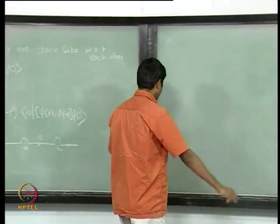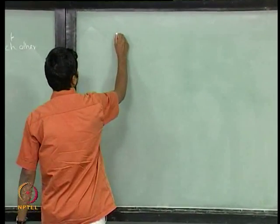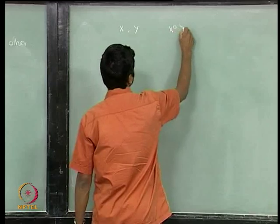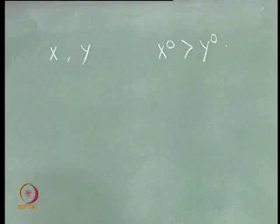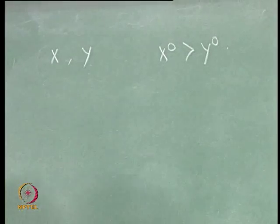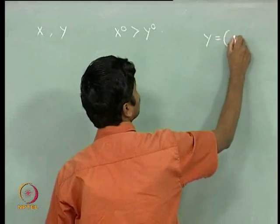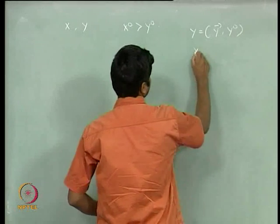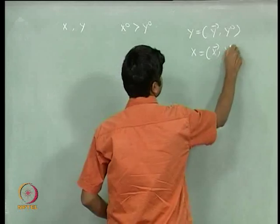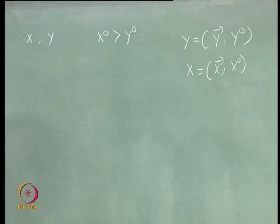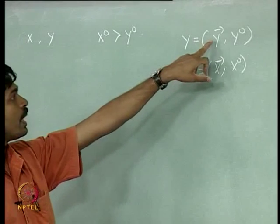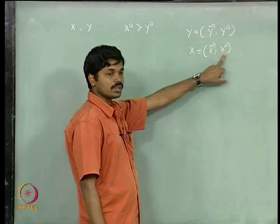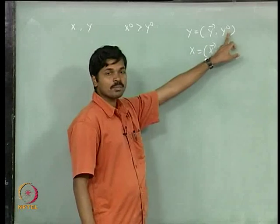Today we will discuss some more of this. Let us consider two points x and y such that x_0 is greater than y_0. In this case, you can talk about a particle propagating from the spacetime point y at time y_0 to the spacetime point x at time x_0. The question you might ask is: what is the amplitude for propagation of this particle from spacetime point y at time y_0 to point x at time x_0? This is what you can ask when x_0 is a later time than y_0.